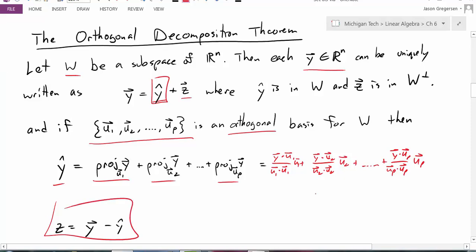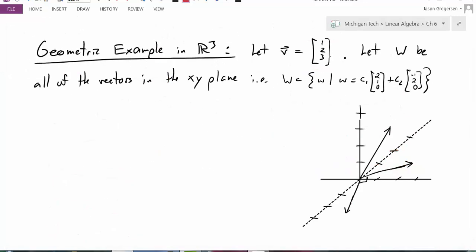Now let's look at a quick example. We have a vector v, and let w be all of the vectors in the xy plane. So specifically, w is the set of all vectors w that are equal to a linear combination of these two vectors. And that would give us all of the vectors in the xy plane.